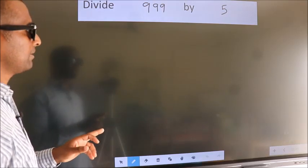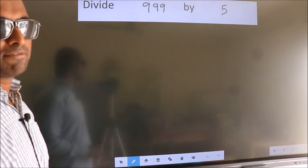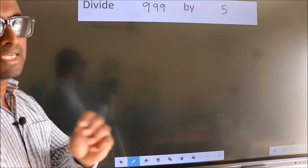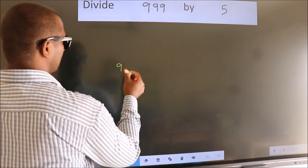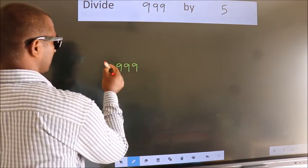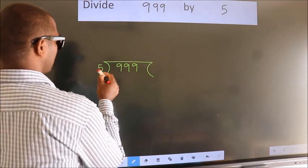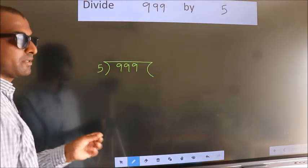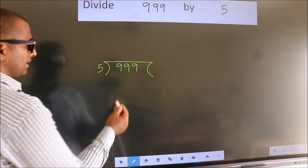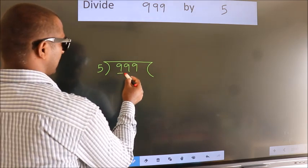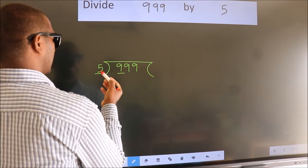We will divide 999 by 5. To do this division, we frame it with 999 here and 5 here. This is step one. We have 9 here and 5. A number close to 9 in the five times table is 5 — one five is 5.